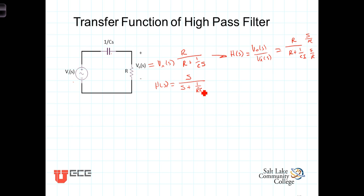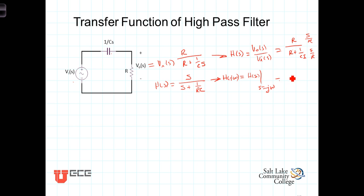We can get the frequency response function H of j omega, which is simply equal to H of S evaluated at S equals j omega. So anywhere in H of S we have an S, we replace it with j omega, and we get j omega over j omega plus 1 over RC.